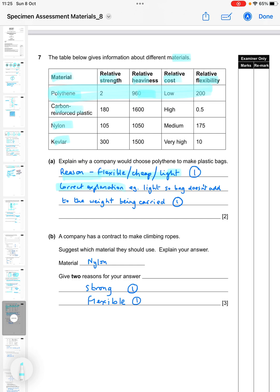A company has a contract to make climbing ropes. Suggest which material they should use and explain your answer. You want something which is flexible and also strong, and nylon is the only one that fits those two criteria. If you look at kevlar, it's really really strong but it's not flexible at all, so that's absolutely useless for a rope. The carbon reinforced plastic again is strong but its flexibility is even worse and it's extremely expensive, so again not really suitable for a rope.